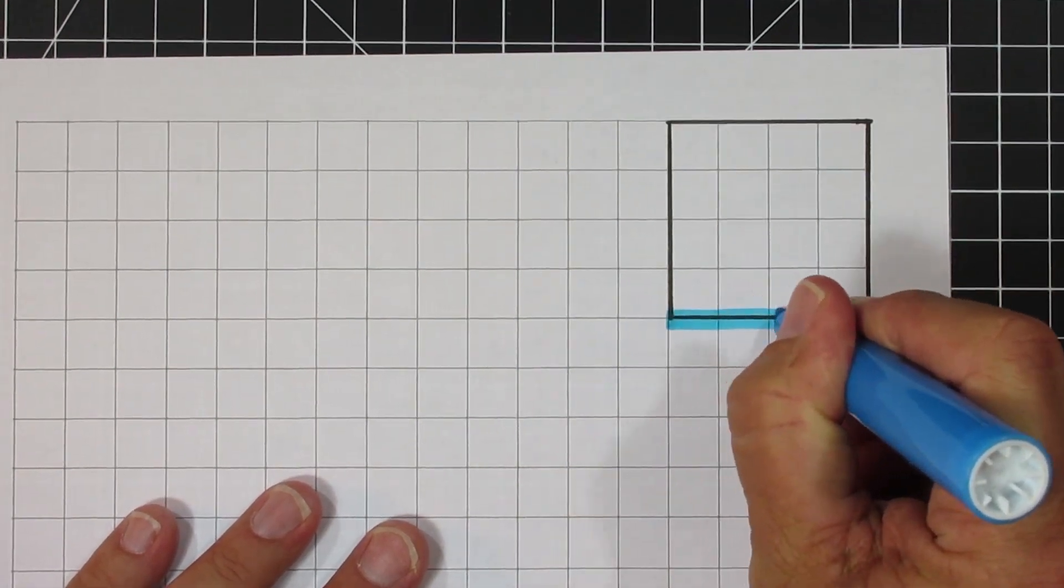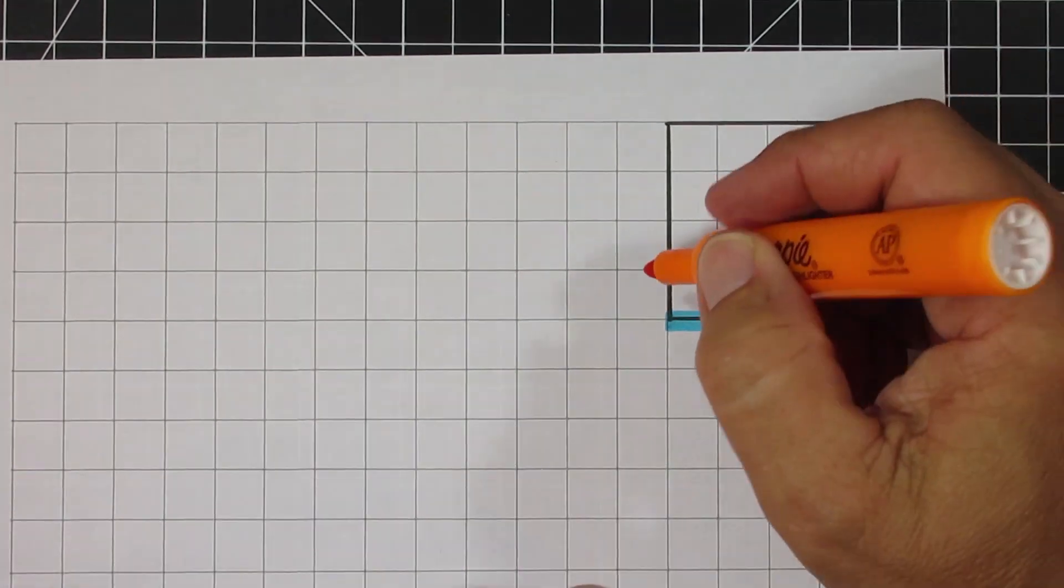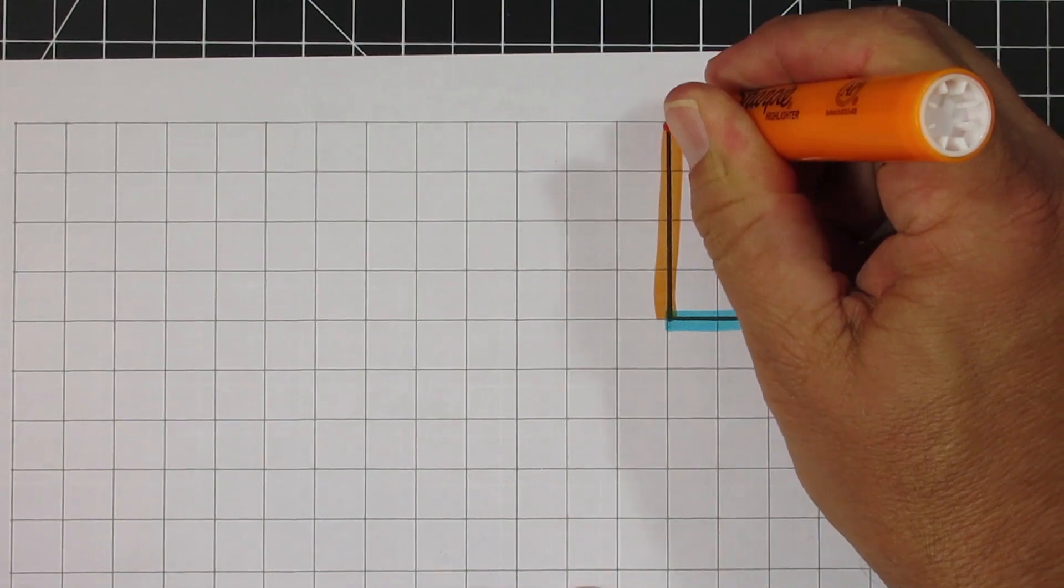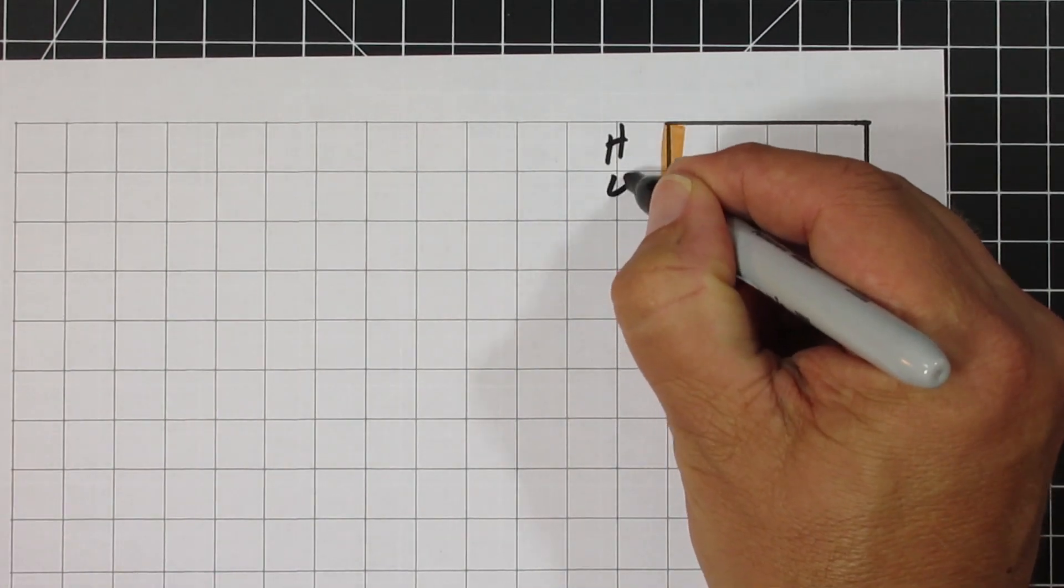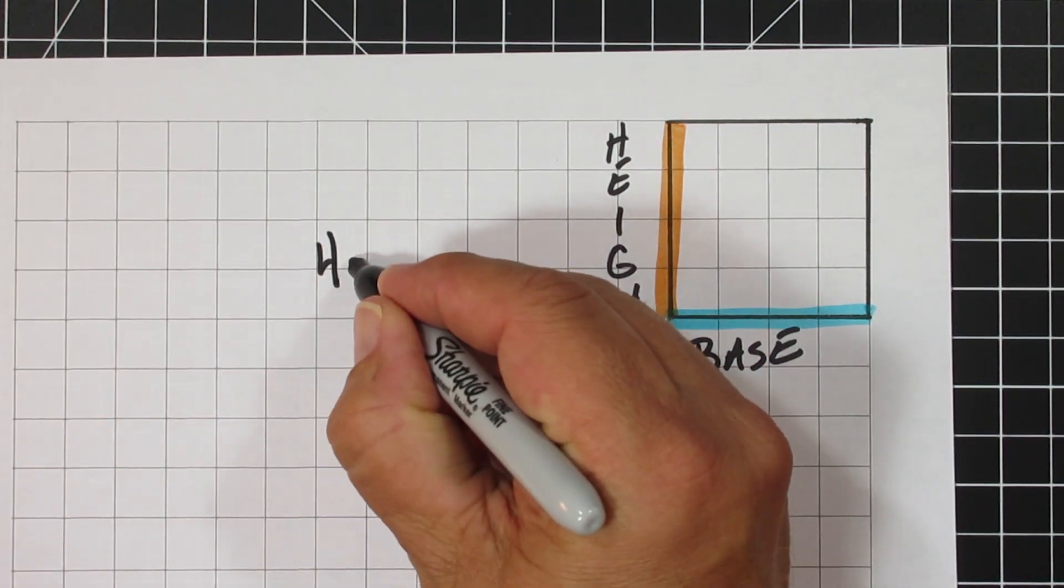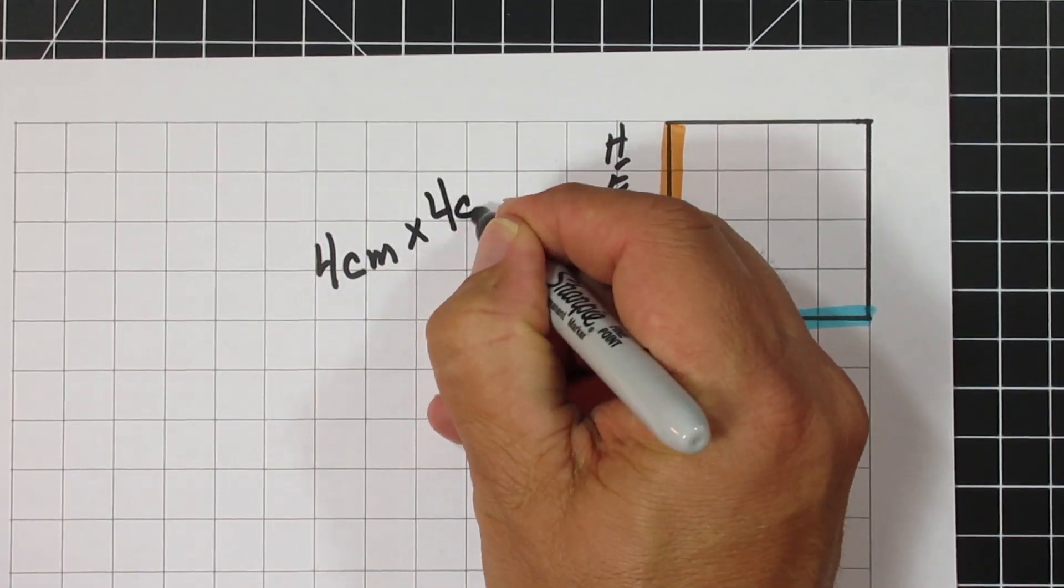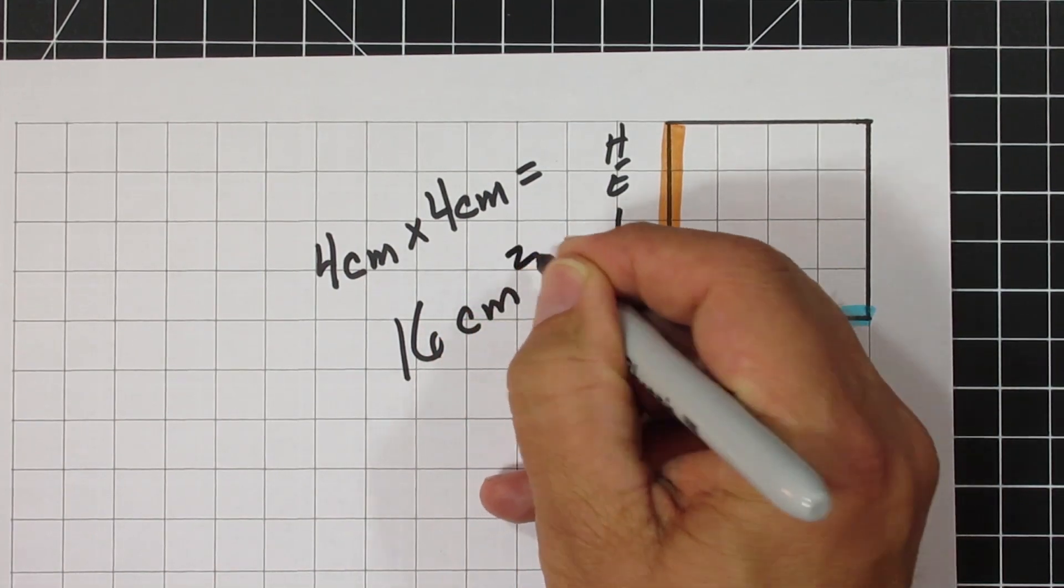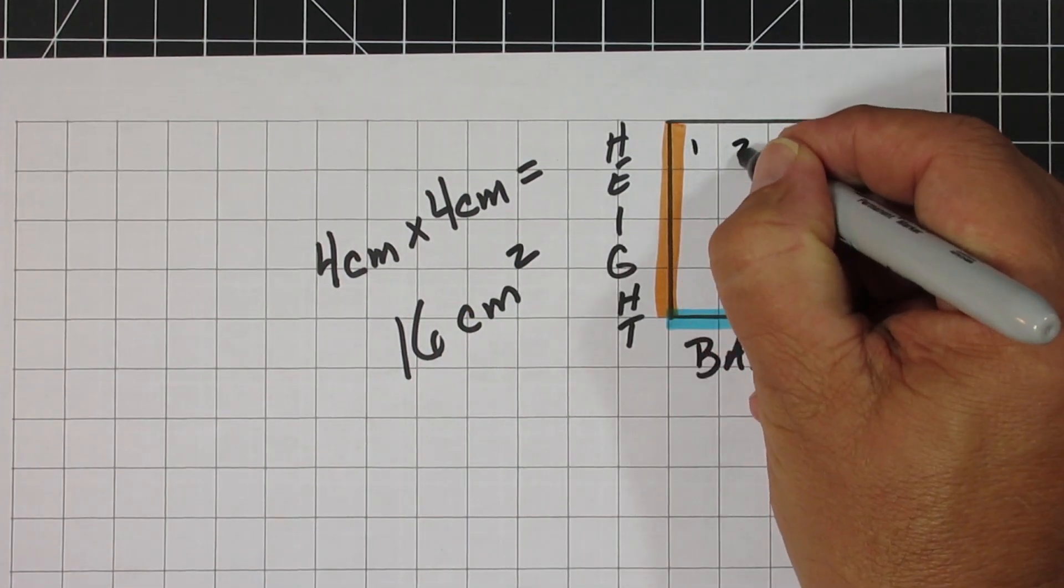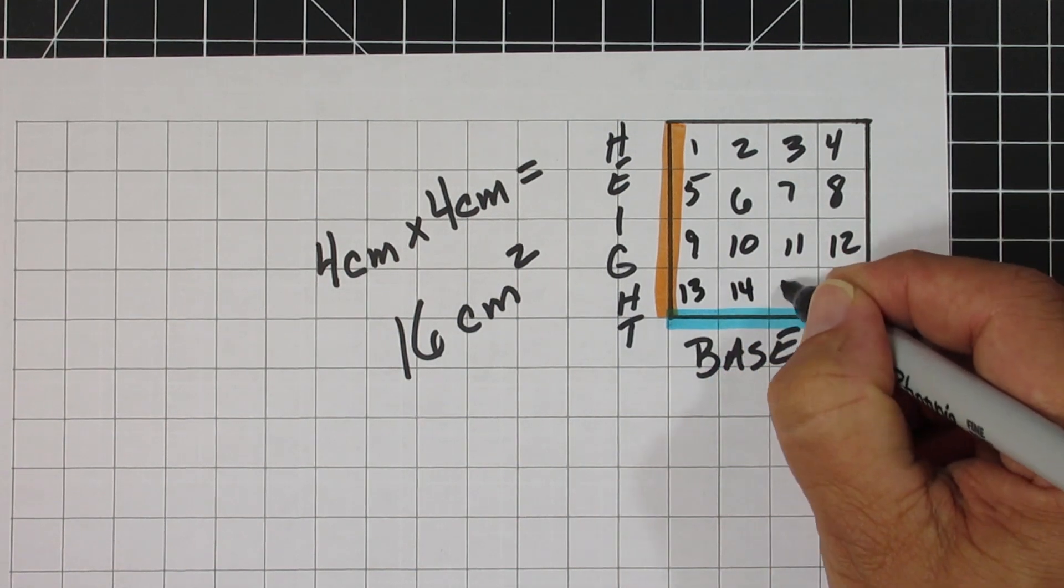We can use this grid to model finding the area of different shapes. For example, the square has a base of 4 centimeters, a height of 4 centimeters. If we take our base of 4 times our height of 4, we're going to get an area of the 16 centimeters squared. Why 16 centimeters squared? If you count up, there's a total of 16 squares inside of the square. Each of these little squares would be 1 centimeter wide, 1 centimeter tall.